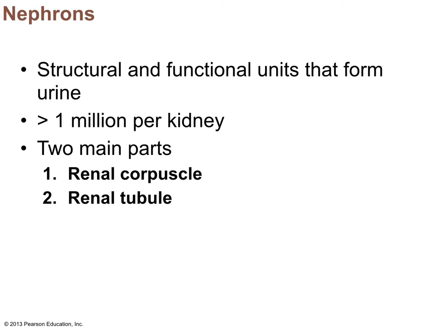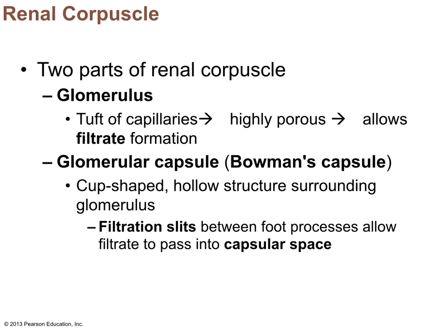The functional unit of the kidney is the nephron — there are more than a million per kidney. These filter the blood and form filtrate. There are two parts: the renal corpuscle and the tubules. The renal corpuscle is made up of the glomerulus, a tuft of very porous capillaries, and the Bowman's capsule (or glomerular capsule) that contains it. There are filtration slits in that capsule made by podocytes, where blood plasma passes through to enter the tubule system.